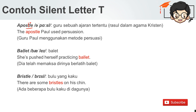Kemudian, di sini kita juga tidak perlu ucapkan huruf T-nya pada kata 'ballet'. She's pushed herself practicing ballet. Dia telah memaksa dirinya berlatih balet. Lalu, sama seperti apostle, kita punya 'bristle' — diawali huruf S lalu diikuti huruf L — bulu yang kaku. There are some bristles on his chin. Ada beberapa bulu kaku di dagunya.